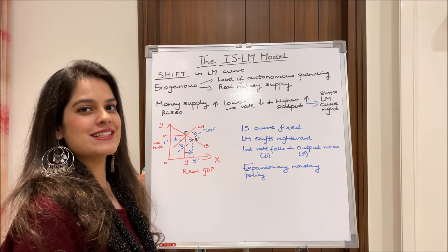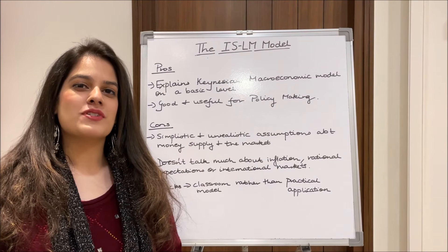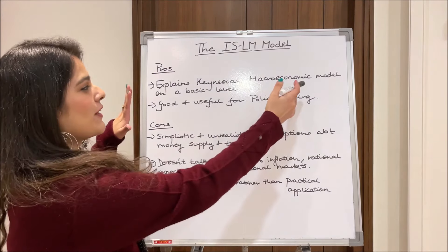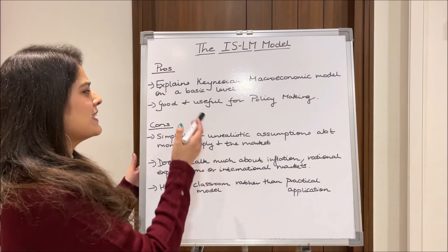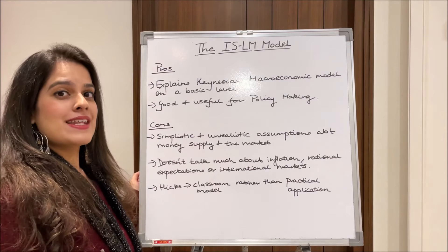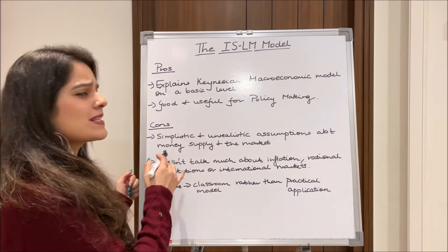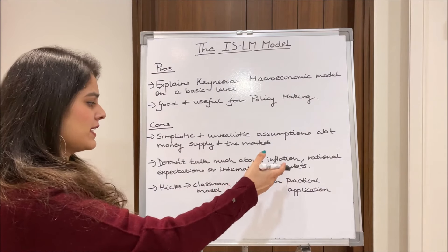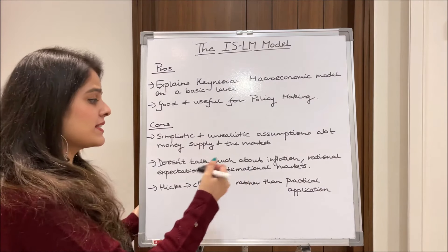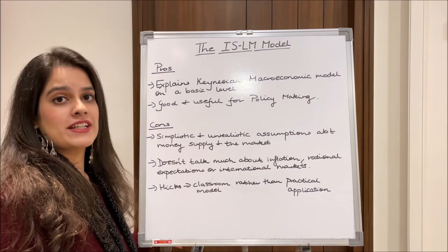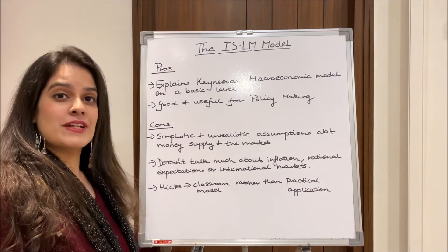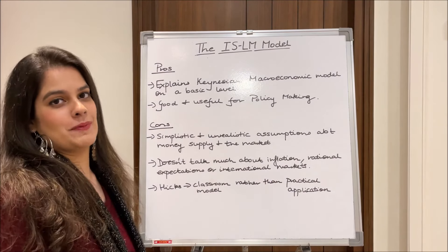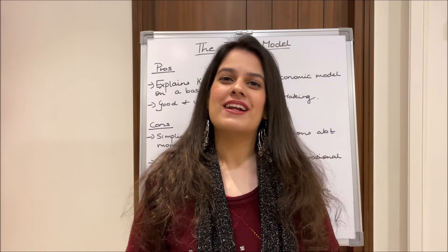Lastly, the pros and cons of the IS-LM model. Pros: it explains the Keynesian macroeconomic model on a basic level, and it is a good and useful tool for policy making. Cons: it takes simplistic and unrealistic assumptions about money supply and the market; it doesn't address international markets, inflation, or rational expectations. Lastly, Hicks himself mentioned that this model is best used as a classroom model rather than in practical application.